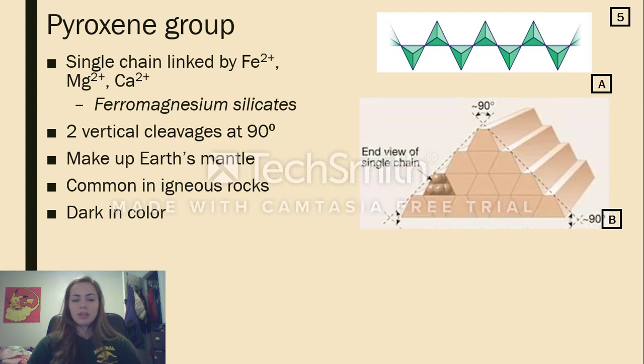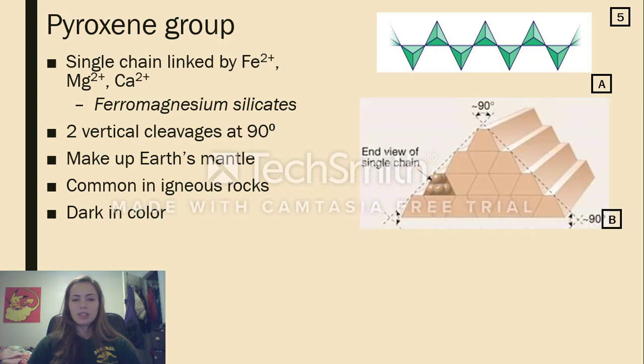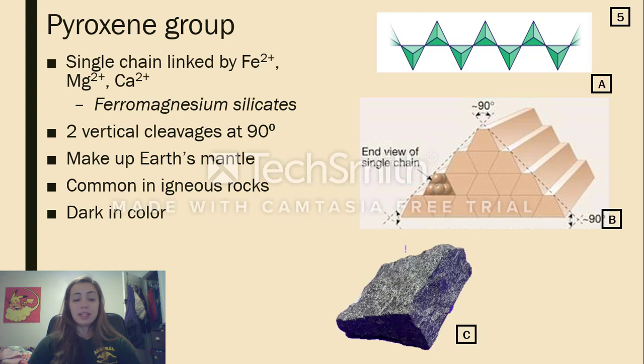There are two major cleavages in pyroxene occurring at 90 degrees from each other vertically. They make up Earth's mantle like olivine, but nowhere near as frequent. They are commonly seen in igneous rocks and are predominantly dark in color.